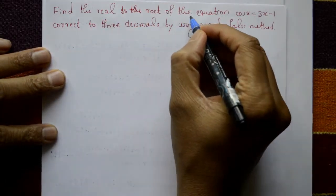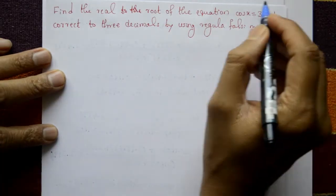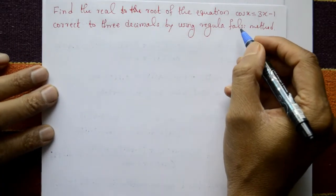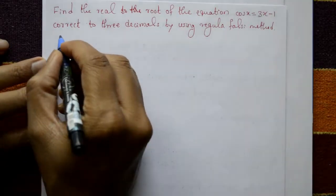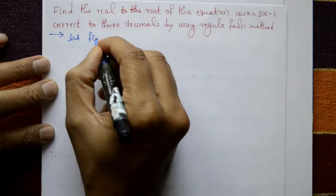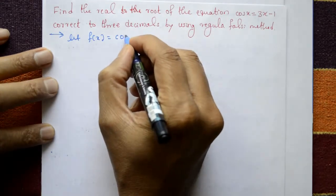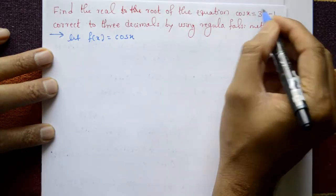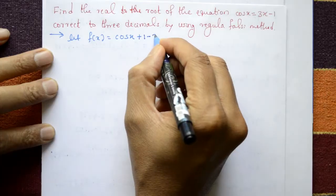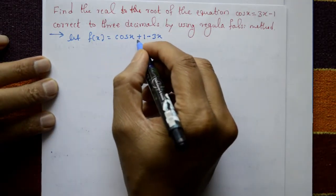Find the real root of the equation cos x = 3x - 1, correct to three decimals, using the Regula Falsi method. Let f(x) = cos x + 1 - 3x.